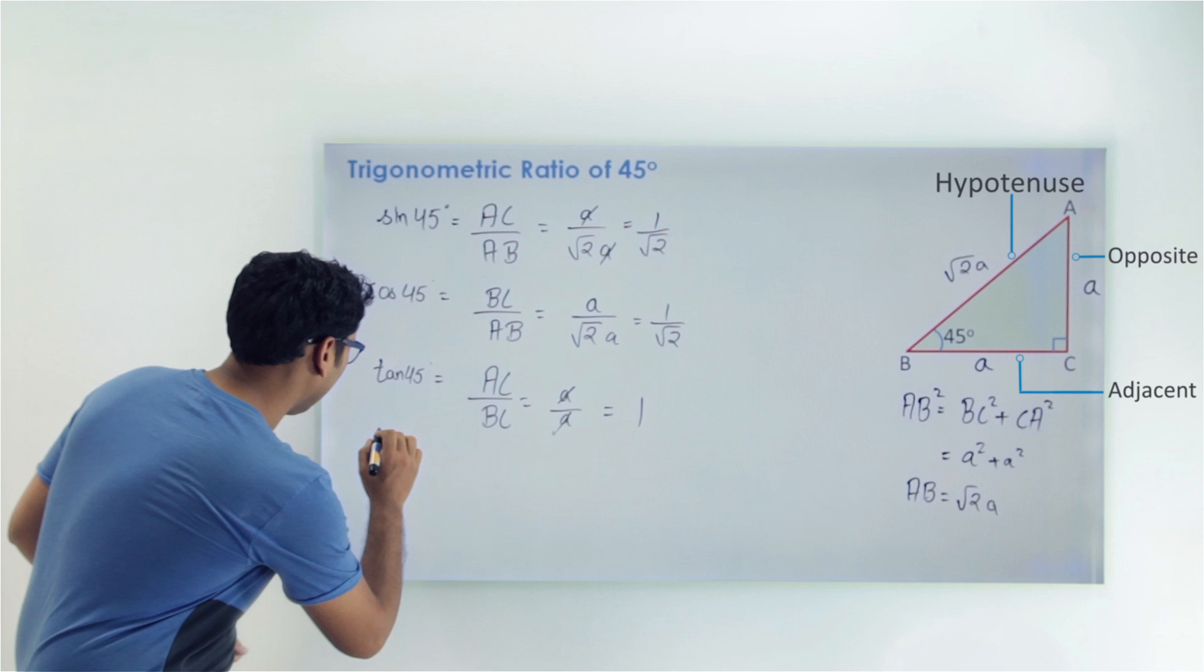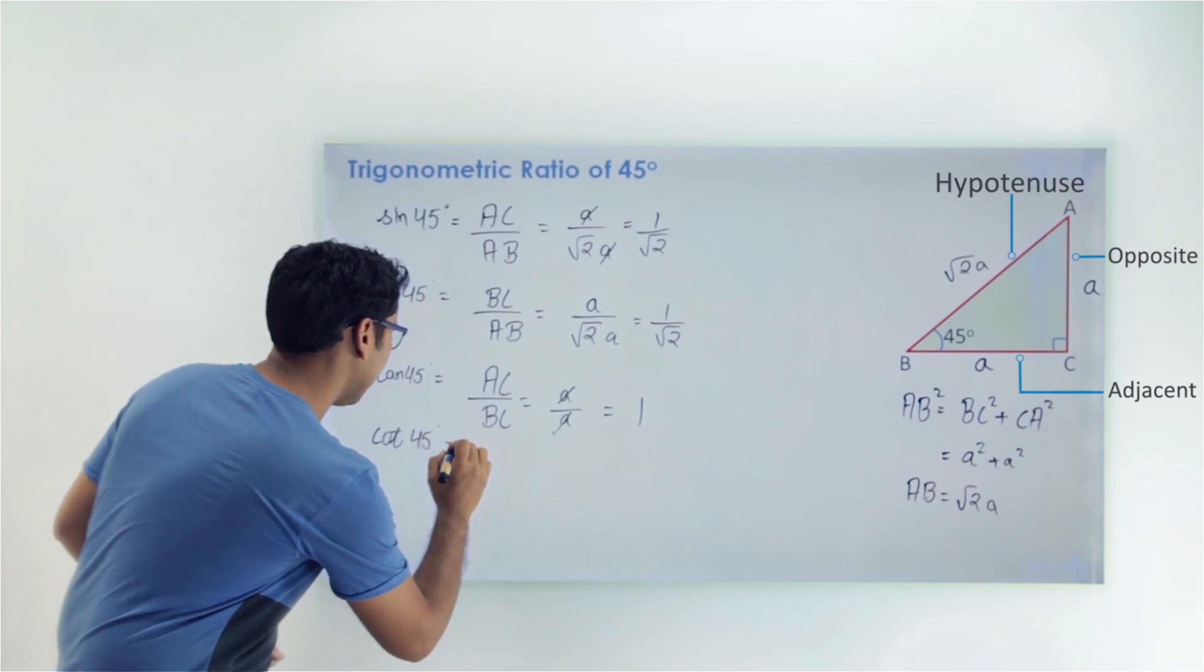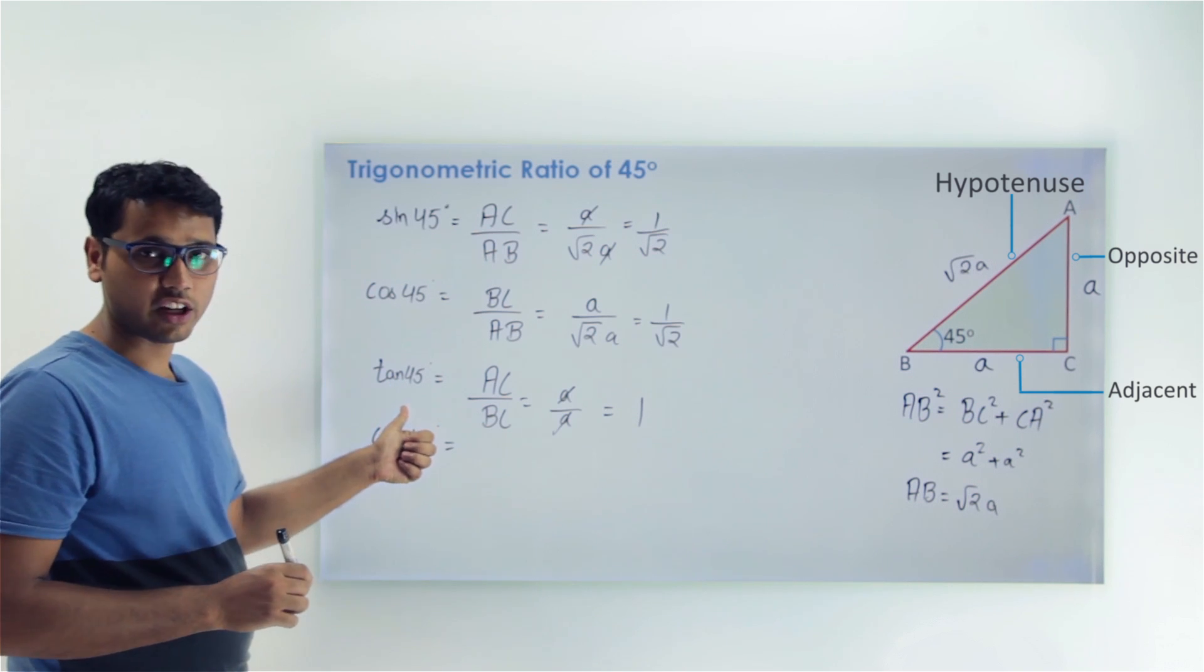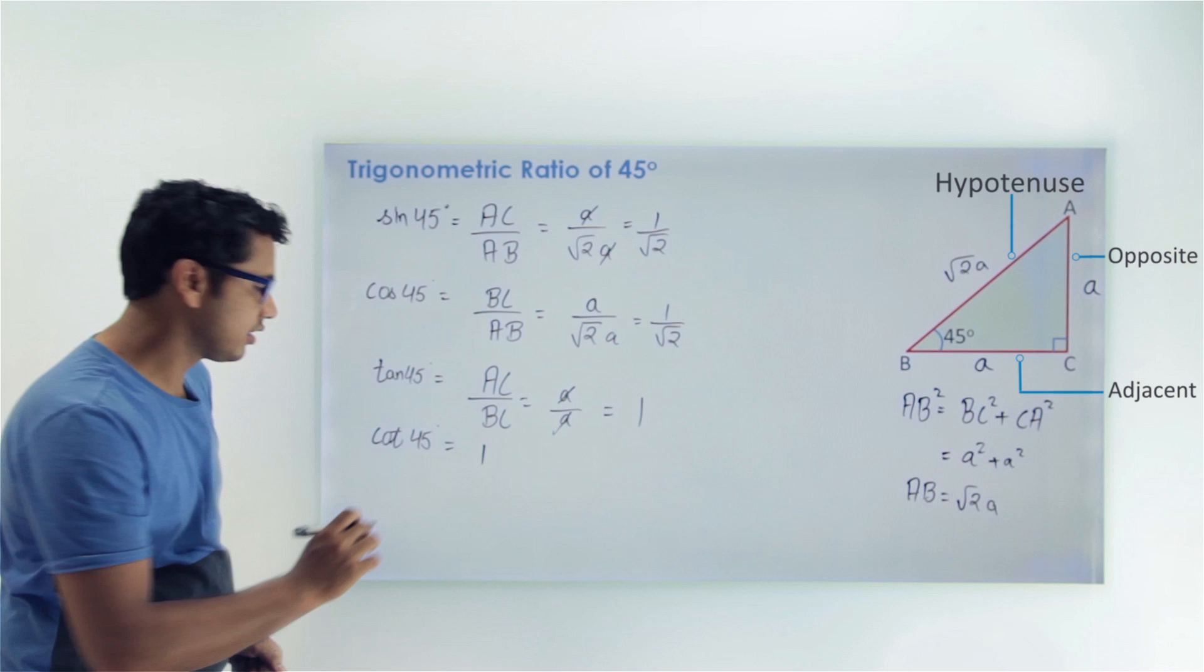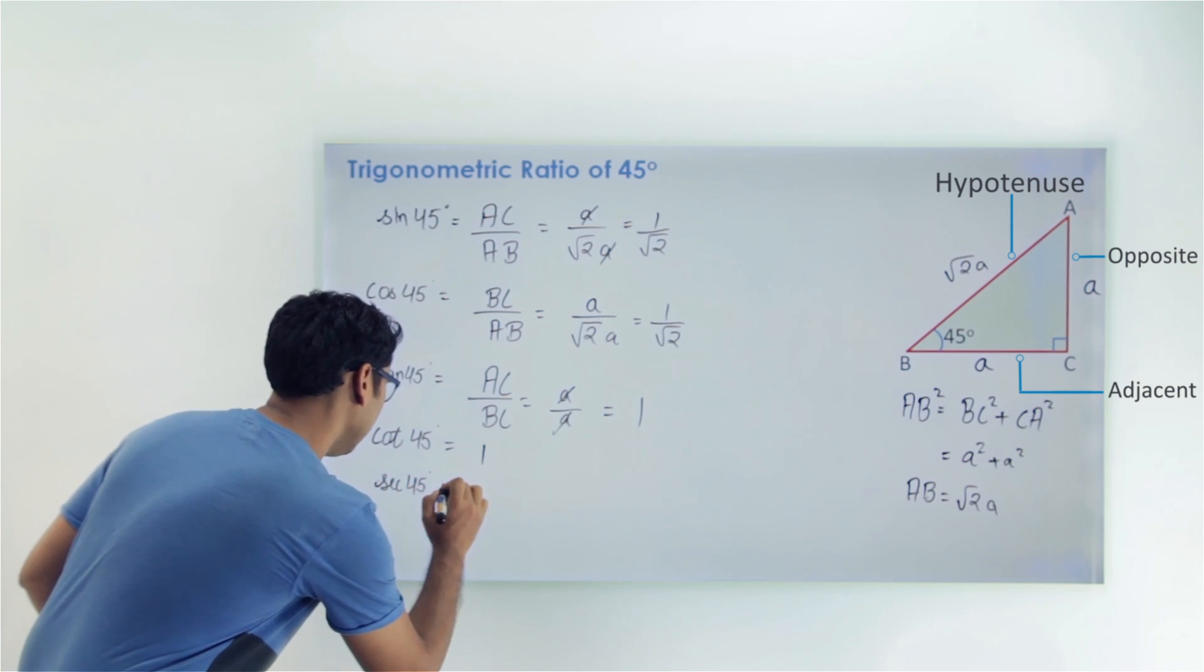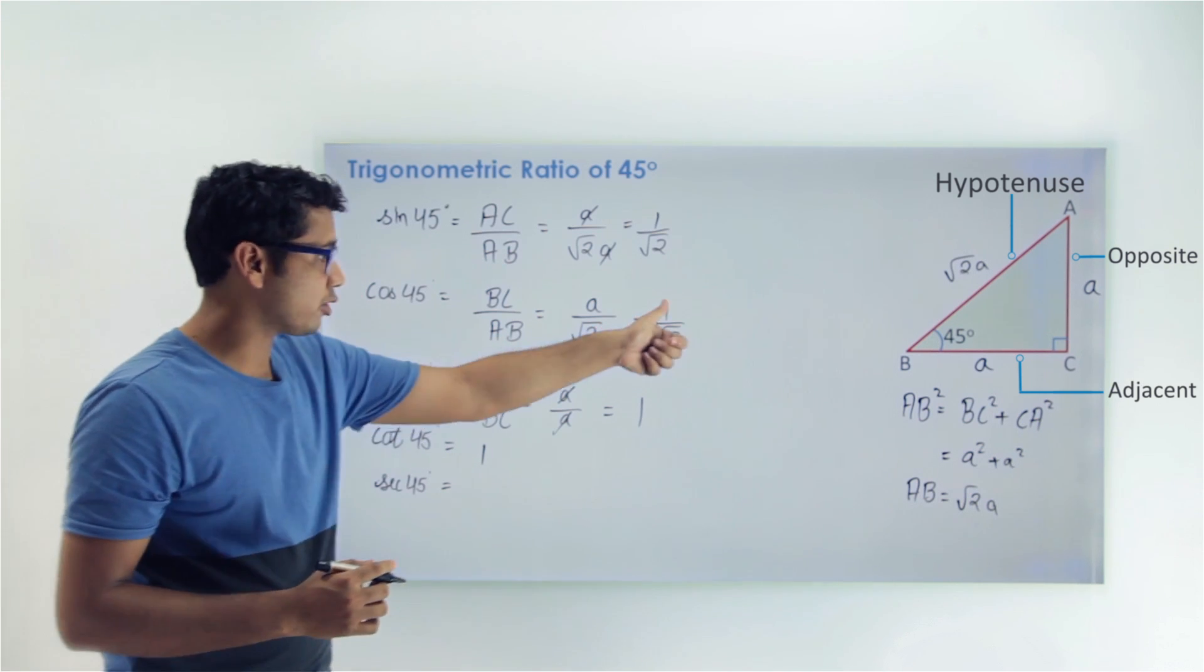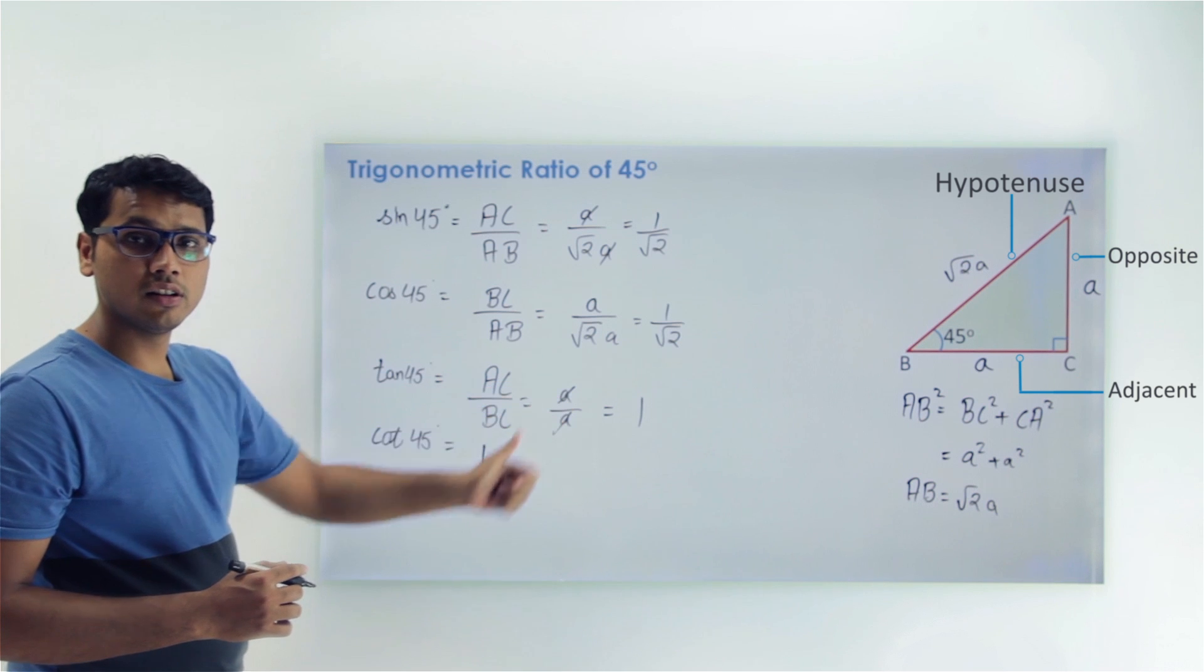Now find the value of cot 45. The value of cot 45 will be reciprocal of tan 45, so this comes out to be 1. Similarly, we can find the value of sec 45. Sec is reciprocal of cos. So we can do the reciprocal of 1 by √2. So the value of sec 45 will be √2.